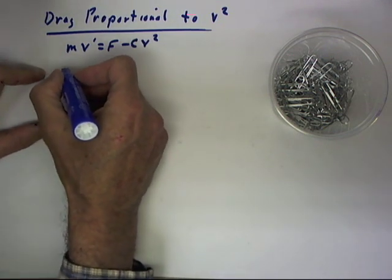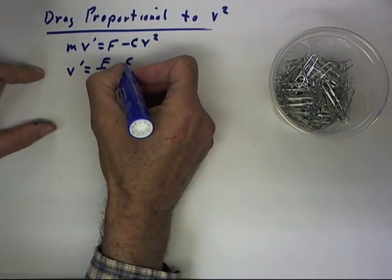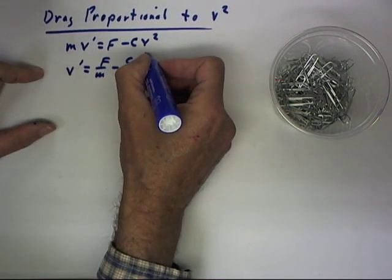This equation is then of the form v' = f/m - c/m v².